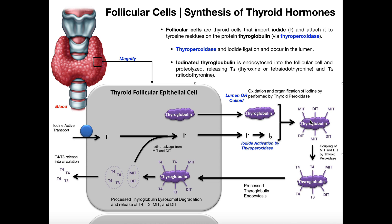Remember there are 20 amino acids and tyrosine is one of them. Tyrosine can be iodinated multiple times. If thyroid peroxidase iodinates a tyrosine once, it's called MIT — monoiodotyrosine. If it's iodinated twice, it's diiodotyrosine, or DIT. On thyroglobulin there are many tyrosine residues, so we get a lot of MITs and a lot of DITs.